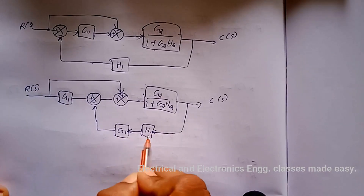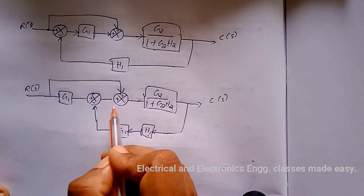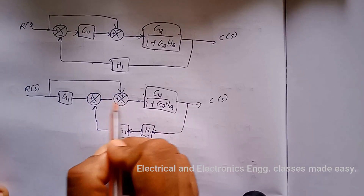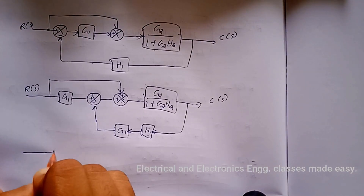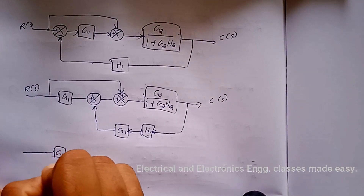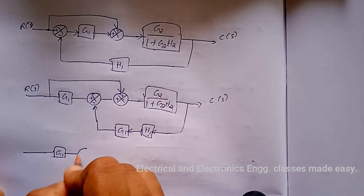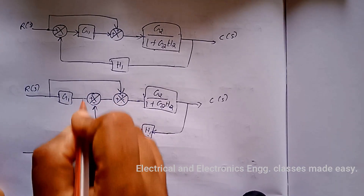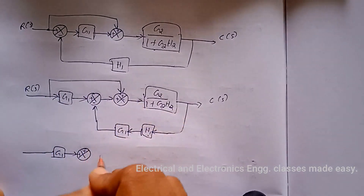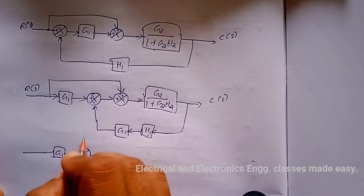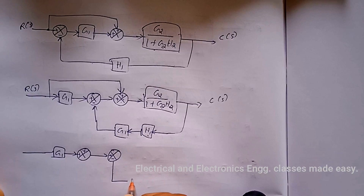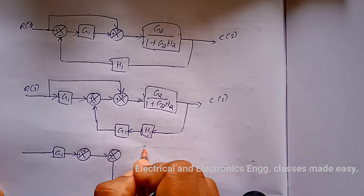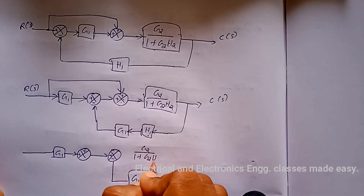Now these two are in cascaded form, so we can multiply. And here this summing point we can interchange. So we get G1, then we interchange this summing point — plus/plus, and plus/minus. Here we get G1·H1 and here G2/(1 + G2·H2), then C(s). And here R(s) with a parallel path.